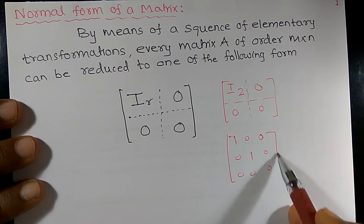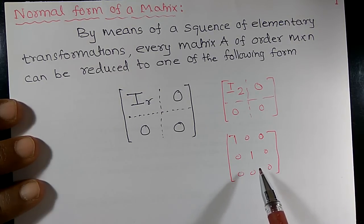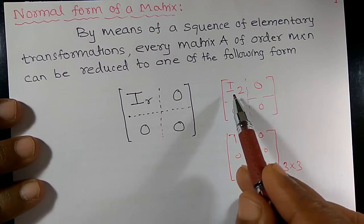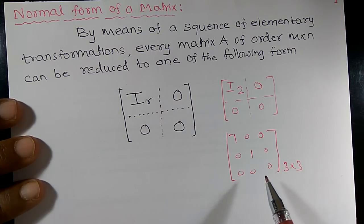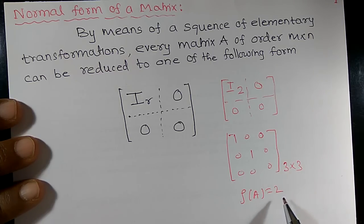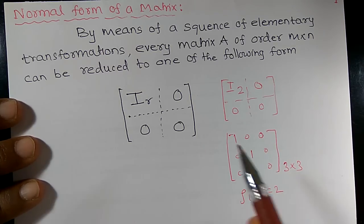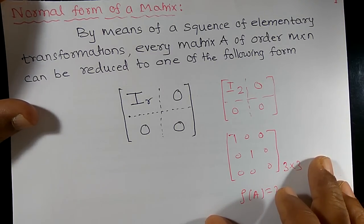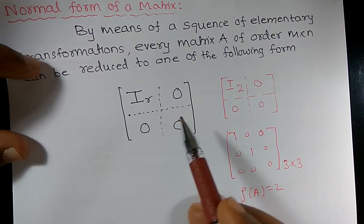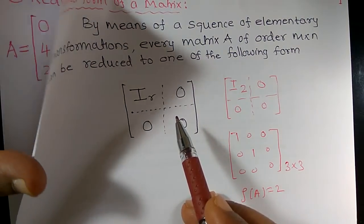Say for example, the given matrix can be reduced to this form. The given matrix is of order 3×3 and it can be reduced to I2 — the unit matrix of order 2 — meaning the rank of that matrix is 2. If it reduces to a unit matrix of order 3, then rank is 3; if order 4, then rank is 4. Sometimes they will ask us to reduce the given matrix to normal form and then find its rank.